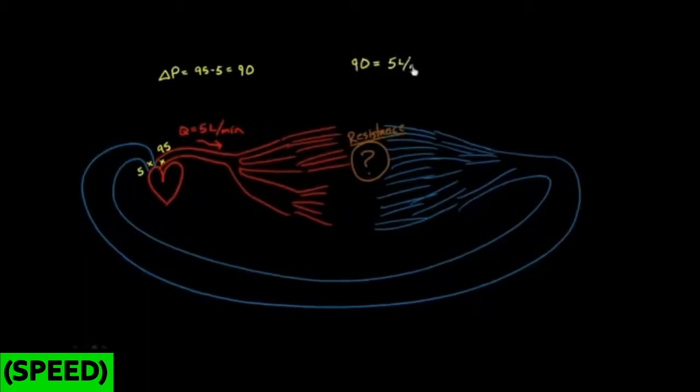Equals 5 liters per minute. Actually, let me take a step back from that. Instead of 90, let me write the units: 90 millimeters of mercury equals 5 liters per minute. That was my flow, that's my Q. And I've got delta P here, and my resistance is the unknown, so I'll just leave that as R.